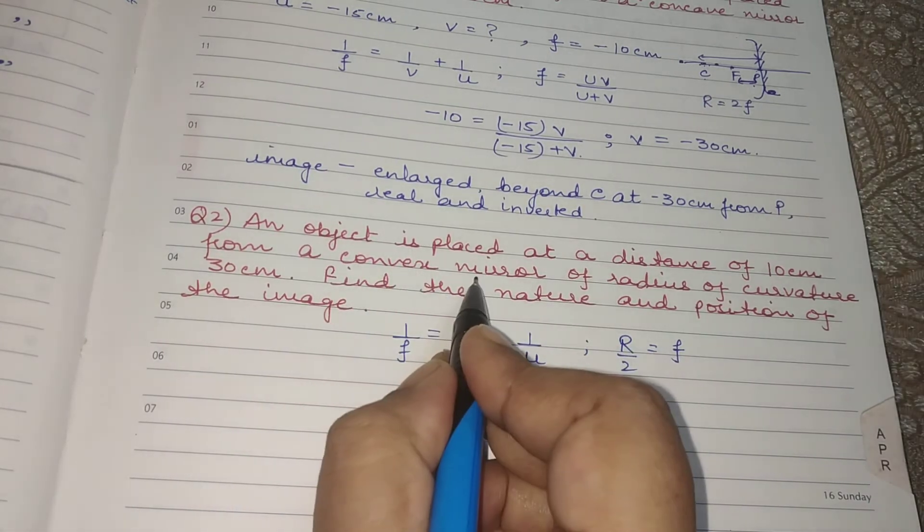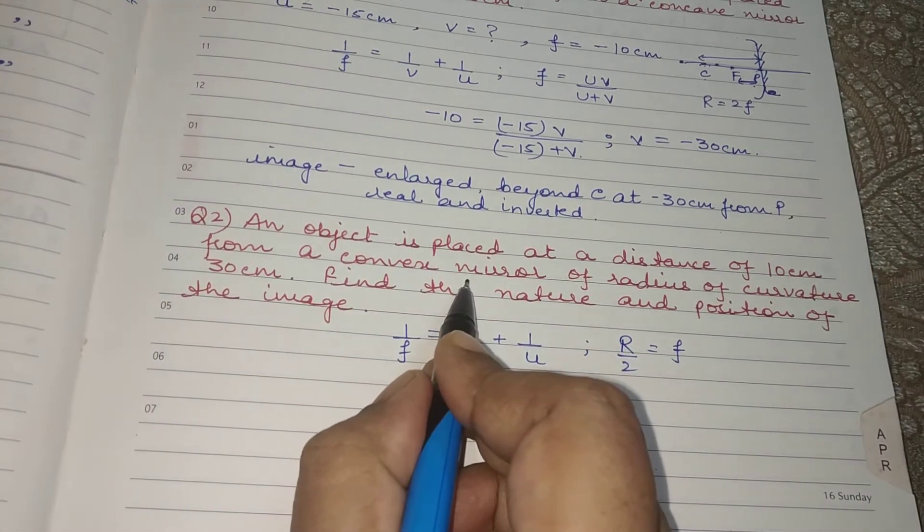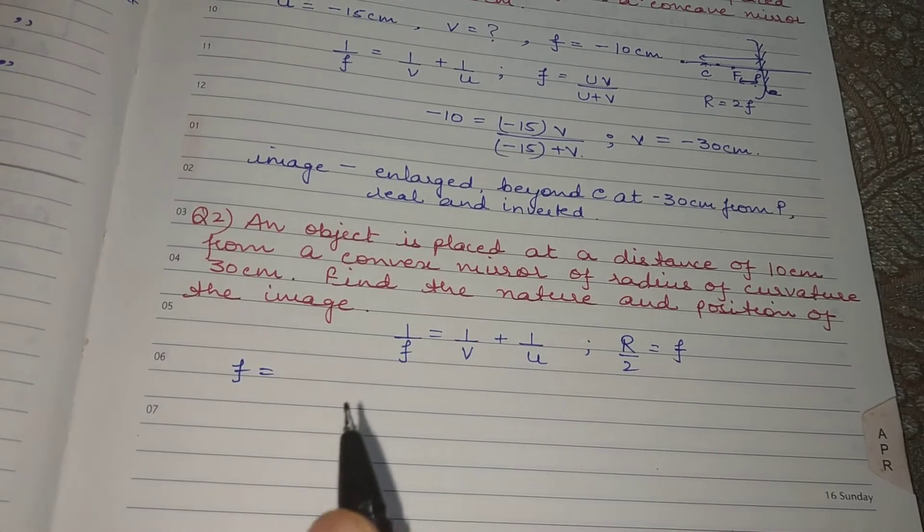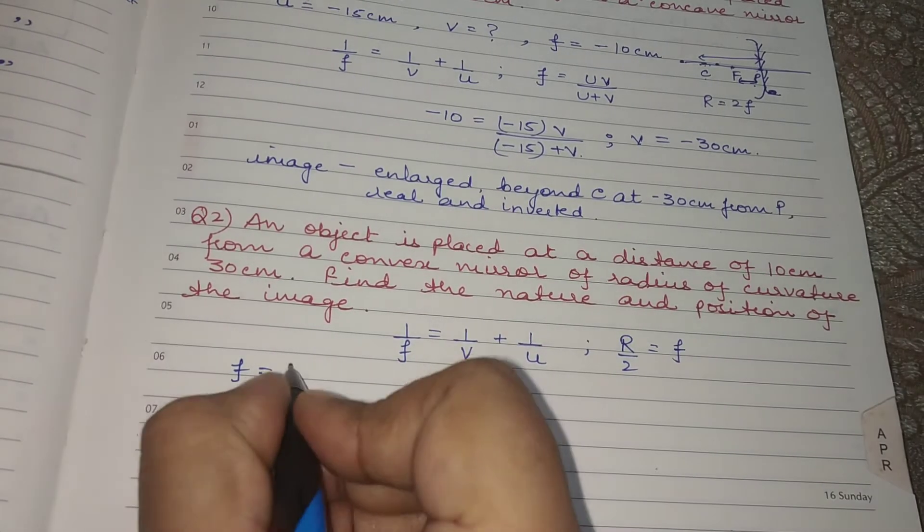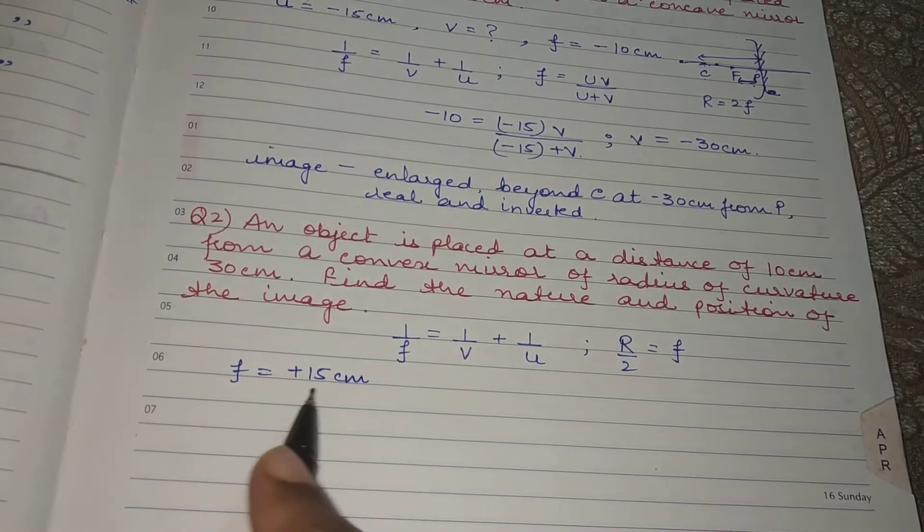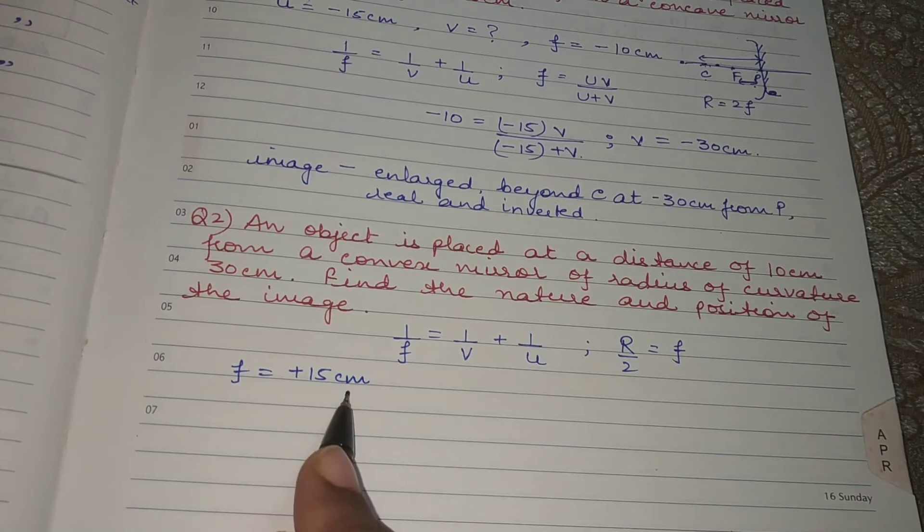This is a convex mirror and you should remember as per sign convention that a convex mirror always has positive focal length. That means the focal length of this mirror will be plus 15 cm.